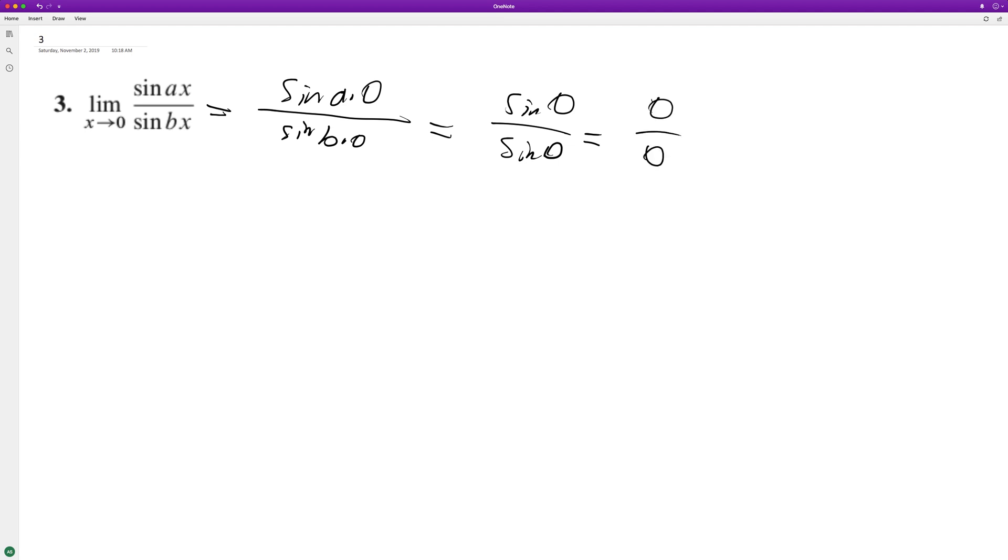This is an indeterminate form, and because of that we cannot be definitive about what the limit actually is. It can't be just zero in this instance. You'd have to have something on the bottom different from the top. Zero in the denominator only works if you've got zero on top.